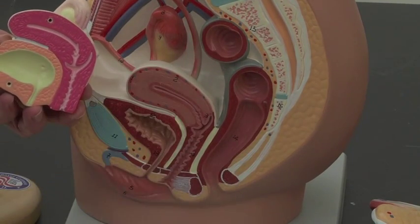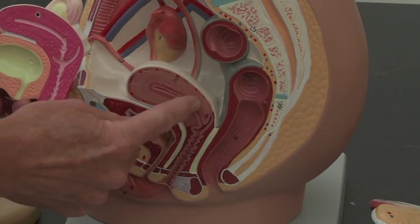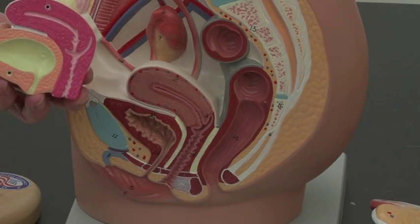You call it cervix, but cervix means neck. So there's the cervix, the body, and then of course this rounded portion is the fundus.